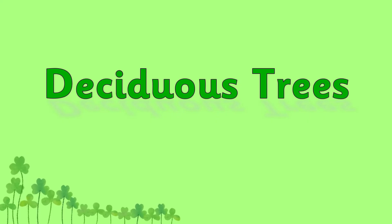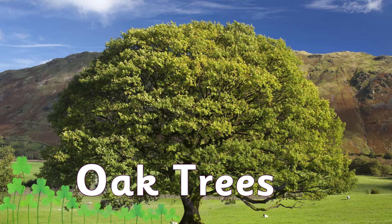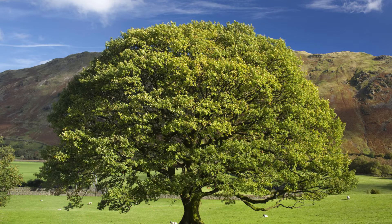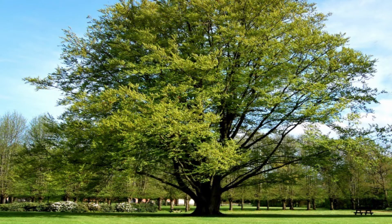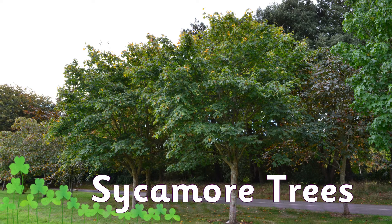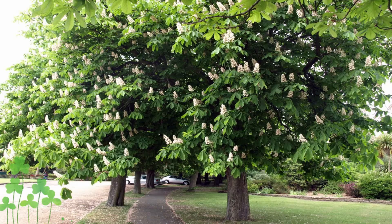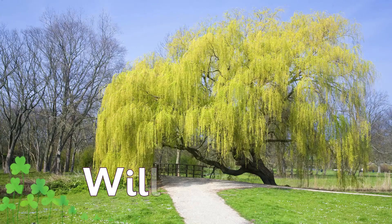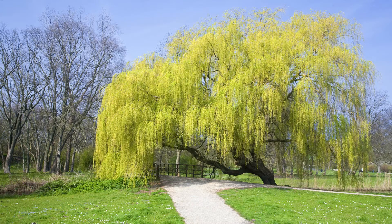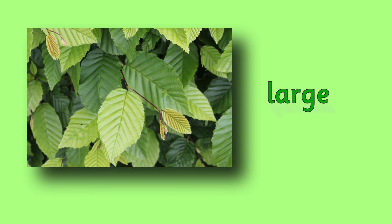Now let's look at some deciduous trees: oak trees, beech trees, sycamore trees, horse chestnut trees - these are the ones that you get the conkers from - and willow trees. Deciduous trees usually have large, flat leaves to catch the sun.